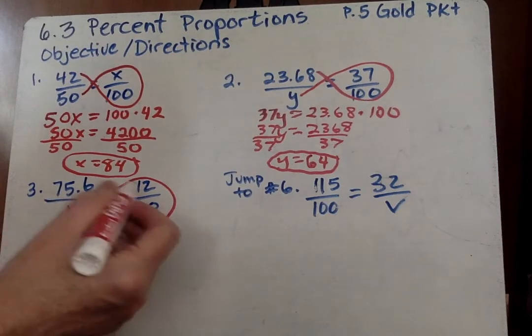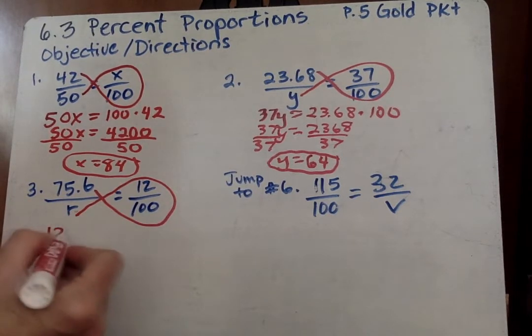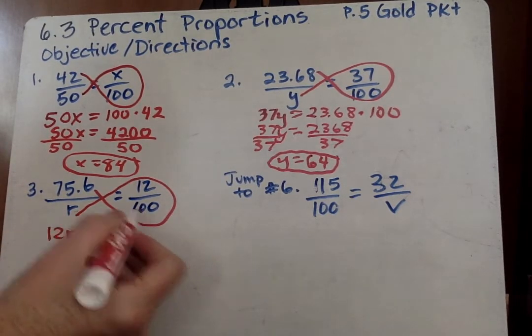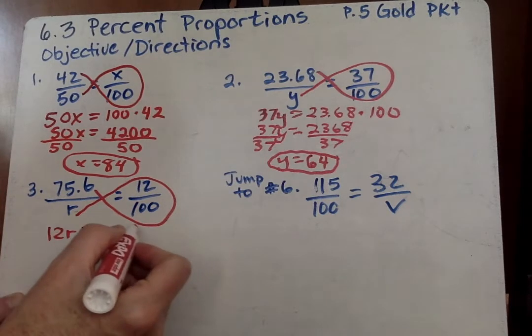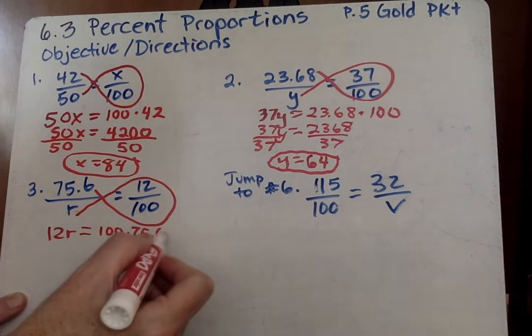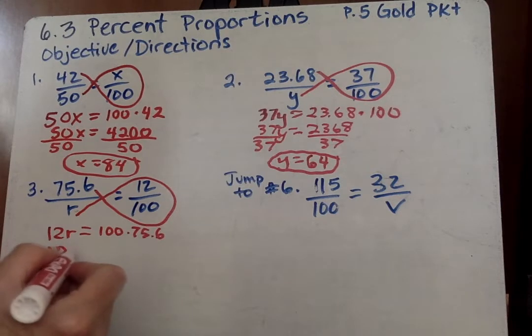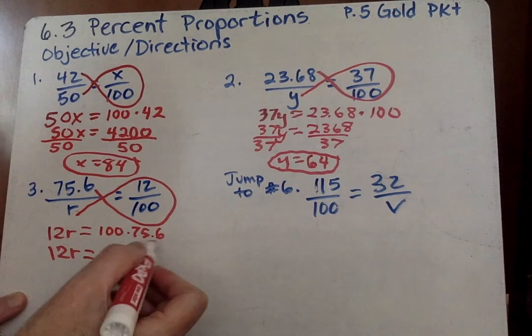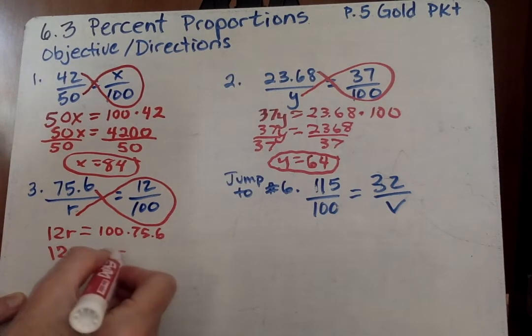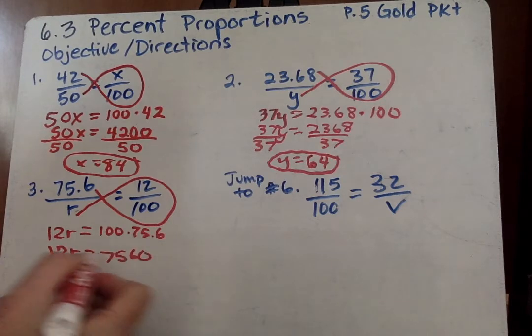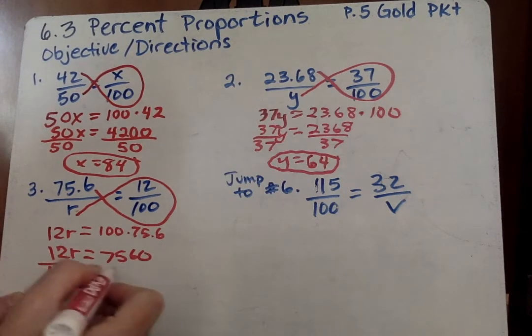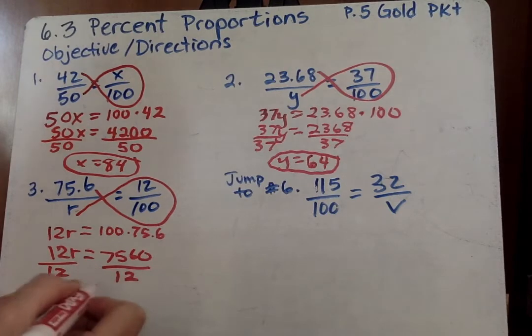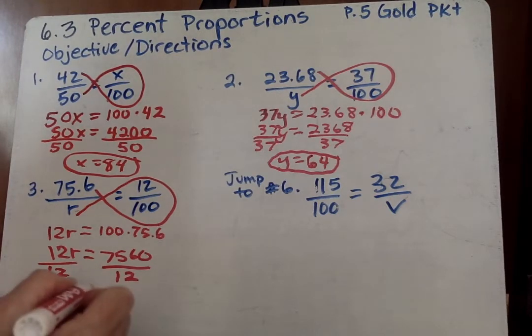It's the same thing every time. 12 times r is 12r equals 100 times 75.6. 100 times 75.6 is 75.60. Then we divide by 12.